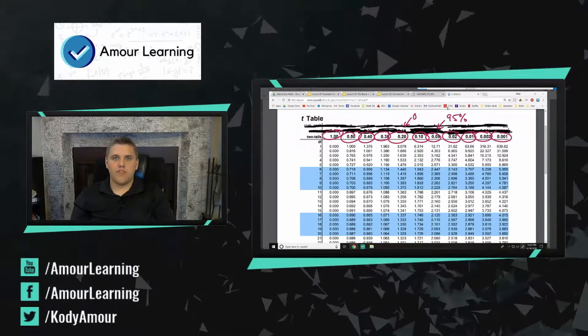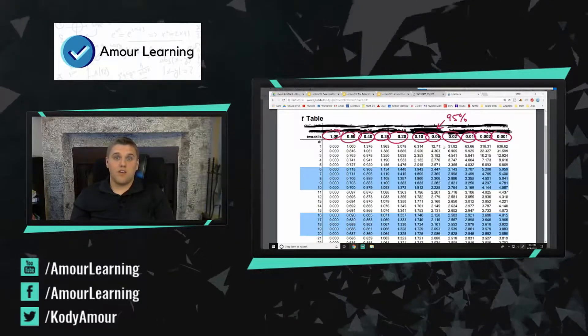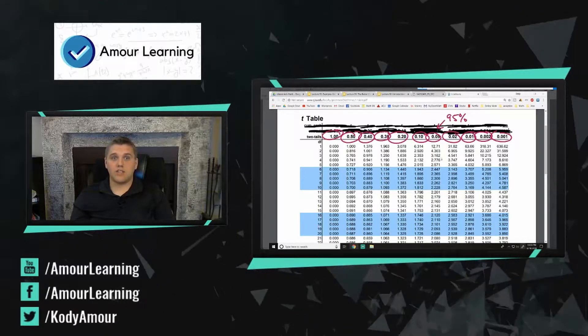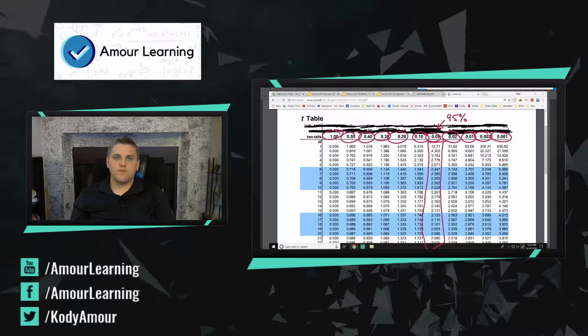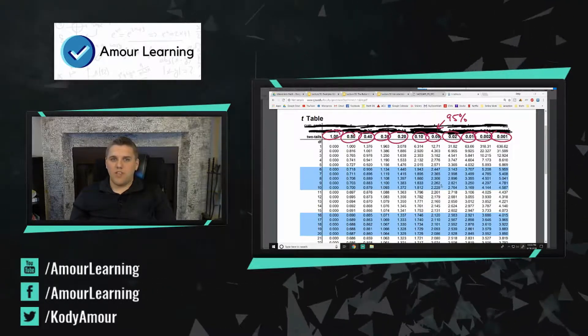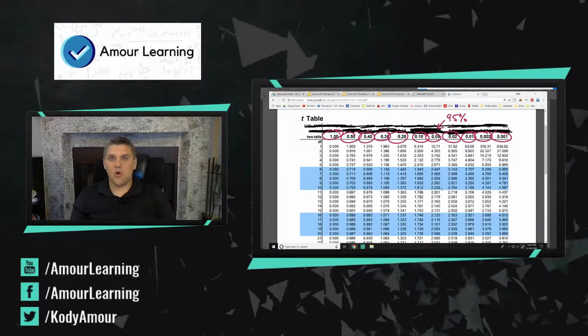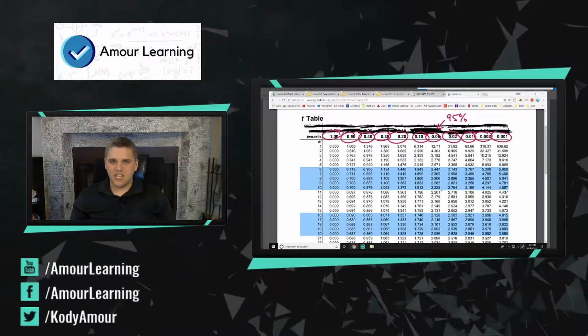So it's important to understand that this column right here is the 95% column. So we're probably going to be using these T-scores a lot. Now these are all T-scores. Now how do we read this? Which T-score do we take? Because if we're using a 95% Z-score, we would take 1.96. But what about a 95% T-score?